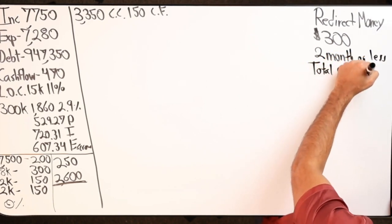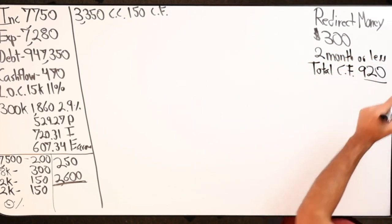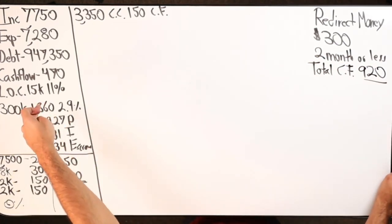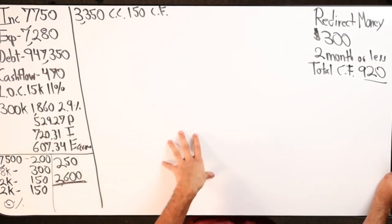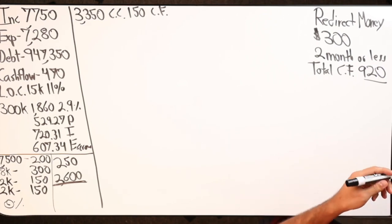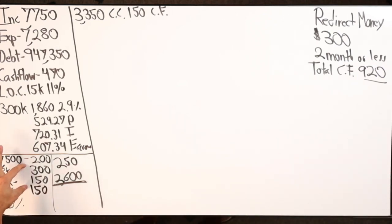Total cash flow $920, that's the goal, two months or less. If I have a $15,000 line of credit, 66% of that is $9,900. So we're going to take the $9,900 minus the $3,350, that leaves me with $6,550. Now because these are at zero percent, I'm going to leave them alone, not going to touch it.